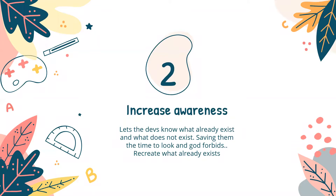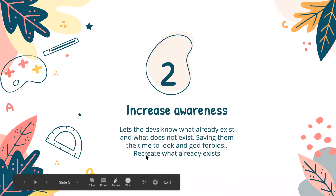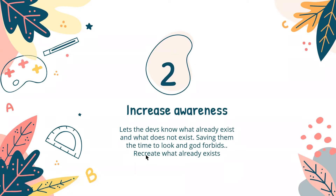VS Code doesn't help you look at components visually. Without Storybook you'd have to read file after file to check if a component is used here or there. Storybook saves you from recreating things and helps you stay aware of what exists.